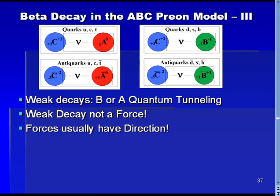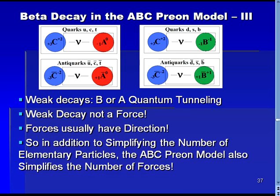When I was first introduced to the weak force, one of the oddest things was that I was told that the weak force had no direction. But all the other forces have a direction, since gravity is attractive, electric forces are either attractive or repulsive, and the strong force is attractive. We can now see why the weak force was different, and that is because it isn't really a force at all. So an additional benefit of the ABC prion model is that in our efforts to simplify the underlying model for elementary particles, we have also simplified the number of forces that exist in nature.